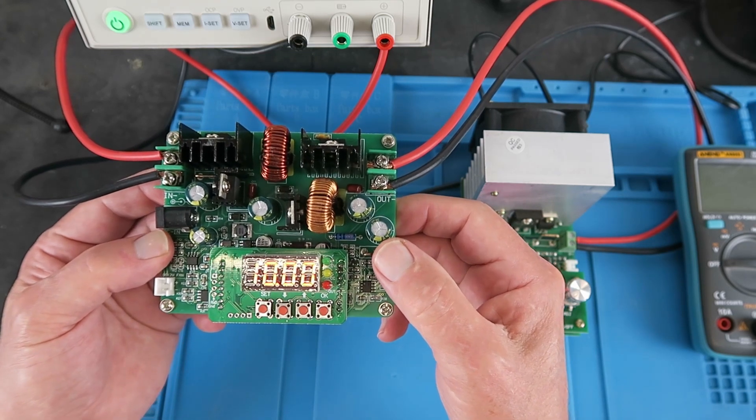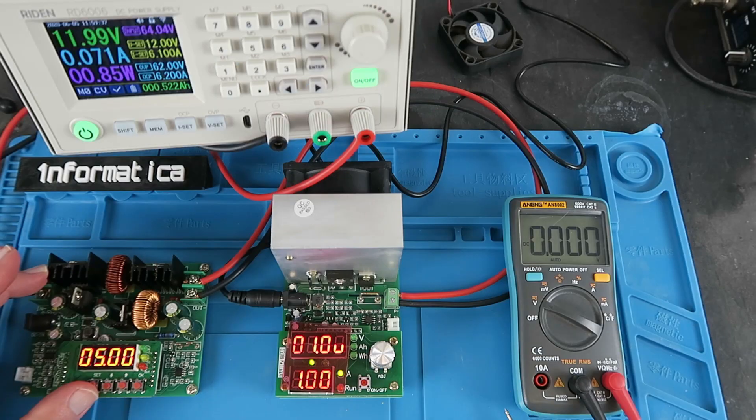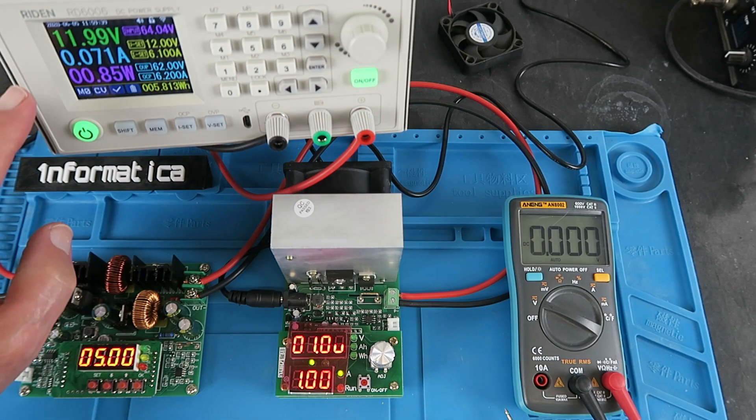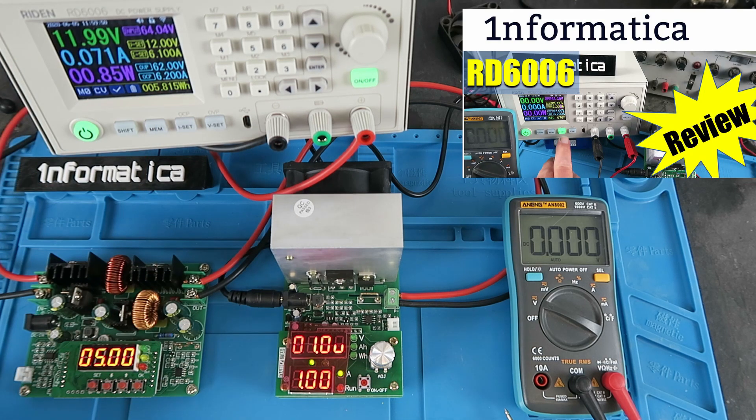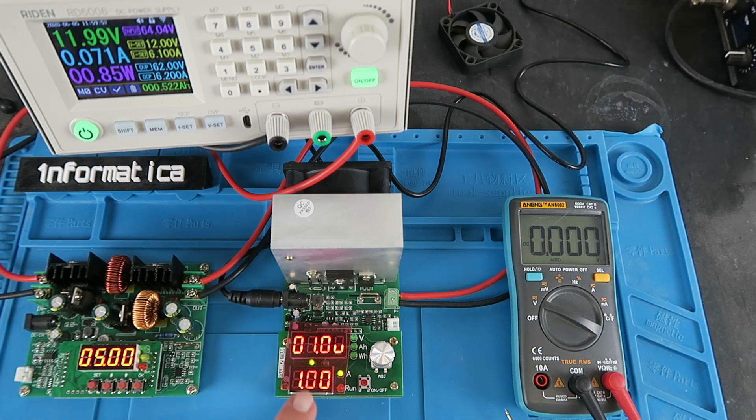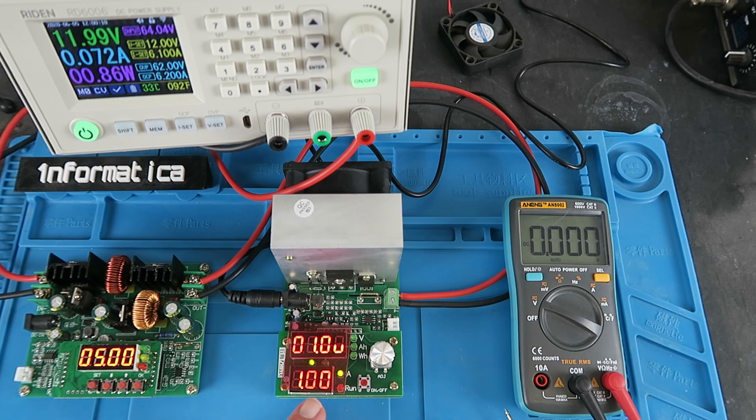Let's hook it up into the test setup and find out for ourselves. The module is being fed by my bench power supply here, set to 12 volts at up to 6 amps. The output is connected to a DC load. Until it's running, the voltage doesn't really mean very much. This is the current which the load is set to at 1 amp.